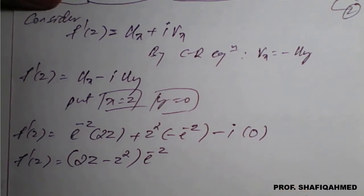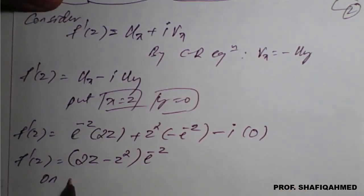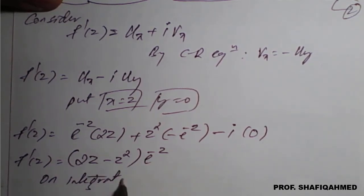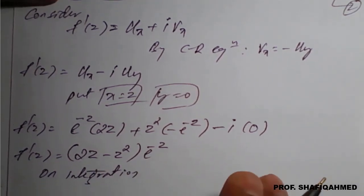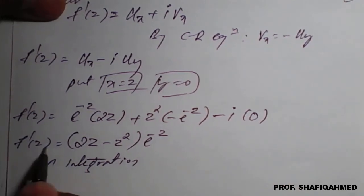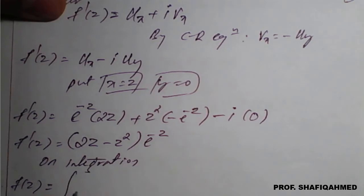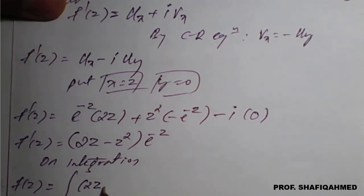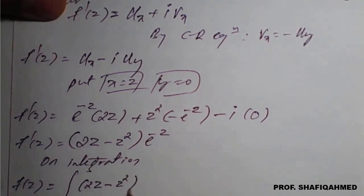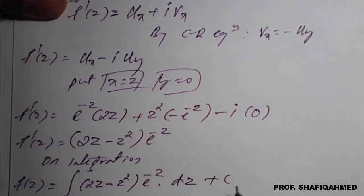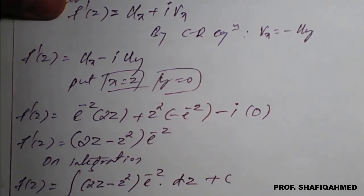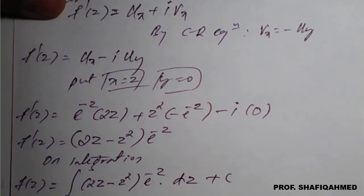We want f(z), so we integrate. f(z) = ∫(2z − z²)e^(−z) dz + c. We will go for Bernoulli's rule of integration for this.